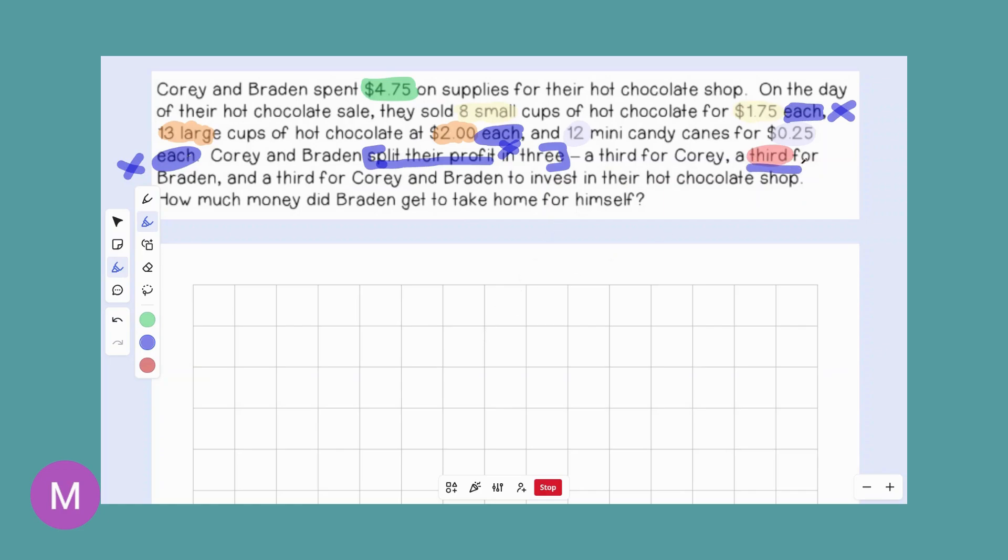And then we had this back up here. So spent is the key word for this one on supplies. And we know that we got to subtract that from their profit or from their earnings to see how much they actually gained in their own pockets. So let's go ahead and begin setting all this up.